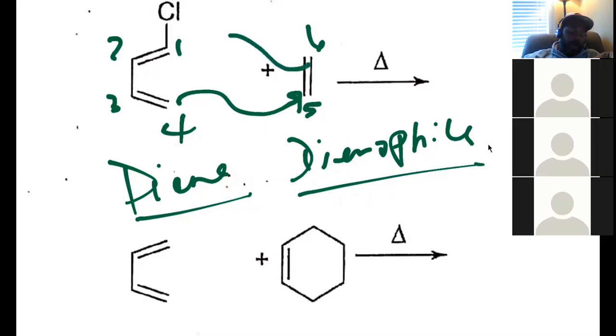And then what happens here? Six to one. Is that right? And then what else? What else do I need to do? Move the pi bond. Right there. Is that right? So if you're following along, which I hope you are, go ahead and draw the product.